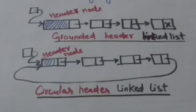In circular header linked list, null pointer is not used and every node has a predecessor.